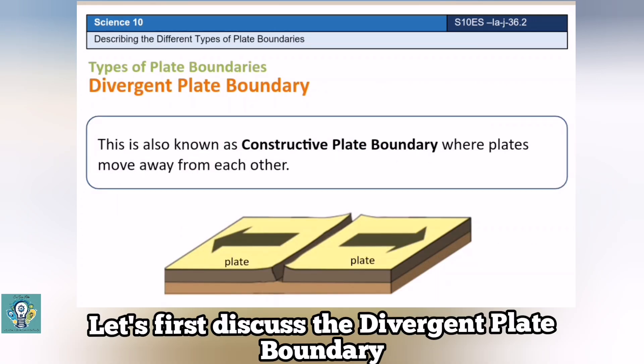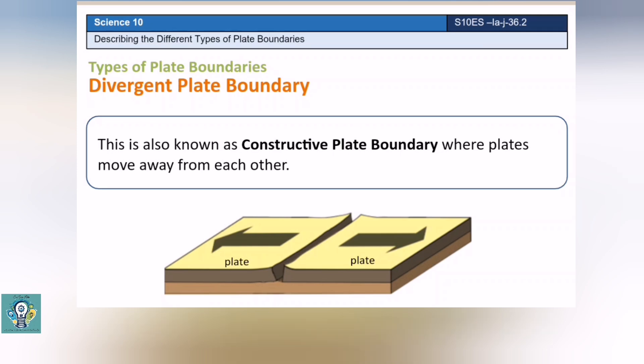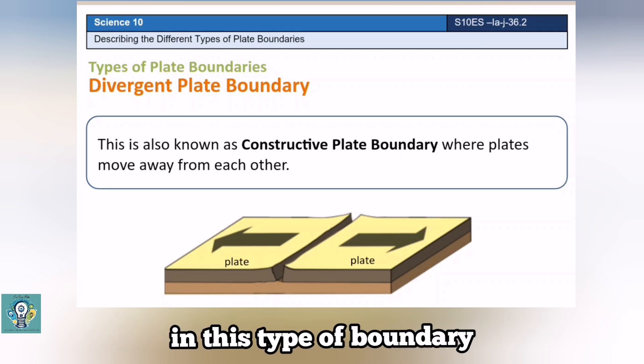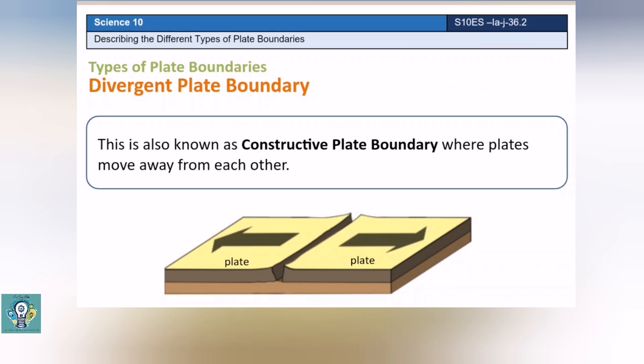Let's first discuss the divergent plate boundary, which is also known as constructive plate boundary. As you can see in the illustration, in this type of boundary, the plates move away from each other.